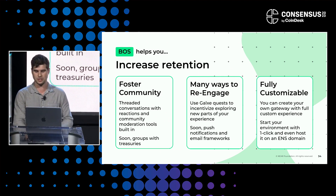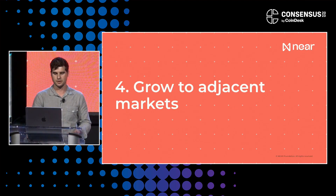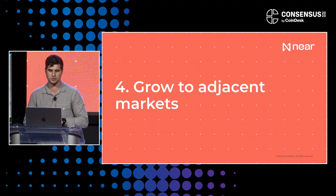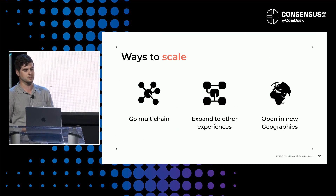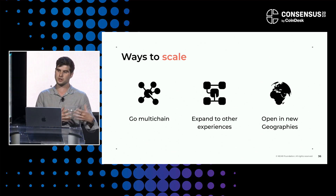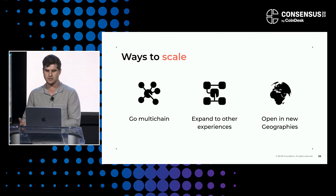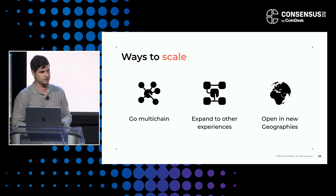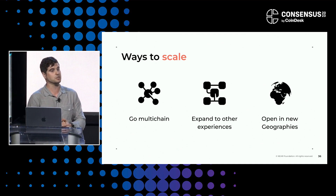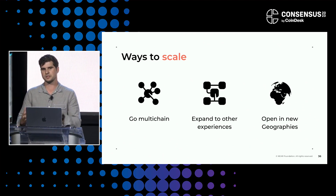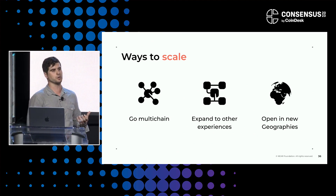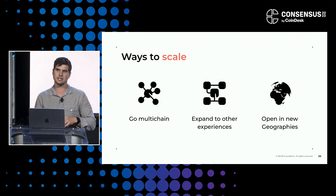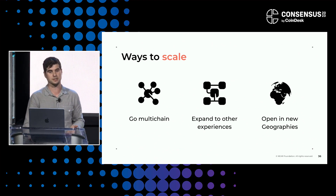The final and most exciting stage is growing to adjacent markets. Traditionally in Web3 and Web2, there are three ways to do this: go multi-chain — like when OpenSea started on Ethereum and then brought in Solana NFTs — expand to other experiences like websites, mobile apps, or partnerships where you embed your service in someone else's app to grow off their network effects, and open to new geographies. You might start in one country and then figure out different ways to grow and localize in other places.